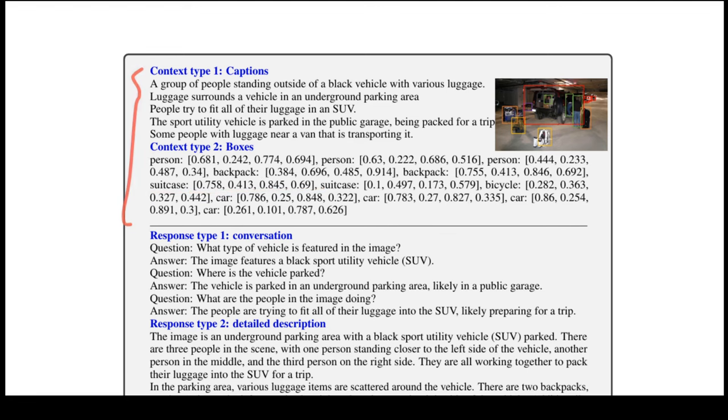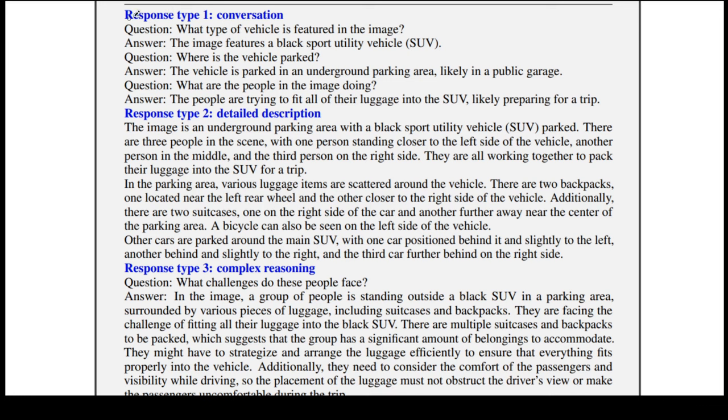With these input prompts to GPT, we can collect three types of responses, namely conversations. For example, the question could be, what type of vehicle is featured in the image? And the answer could be, the image features a black sports utility vehicle. The next response type could be a detailed description of the image. For example, the image is an underground parking area with a black sports utility vehicle parked. There are three people in the scene with one person standing.